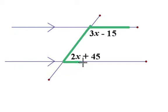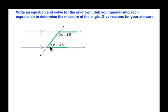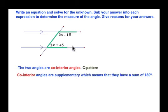When we highlight around these two angles, you can see that they form the C-pattern. In this question, we have a C-pattern formed by the transversal and the two parallel lines. This tells us that these two angles are co-interior angles, and co-interior angles are supplementary, which means they have a sum of 180 degrees.